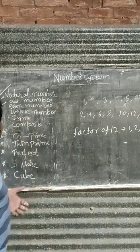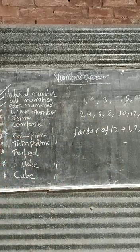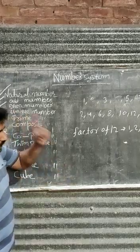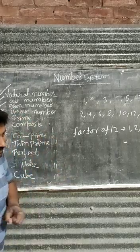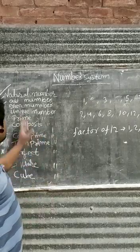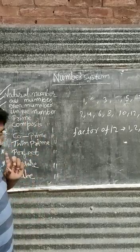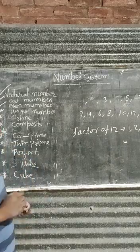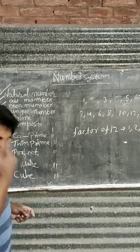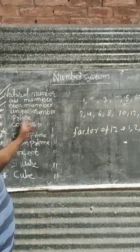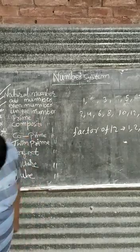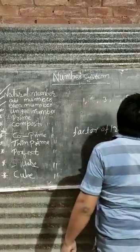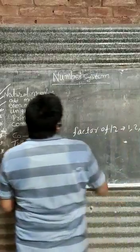Now, unique number. A number which has only one factor, then it is called unique number. A natural number which has only one factor is called unique number. For example, 1.